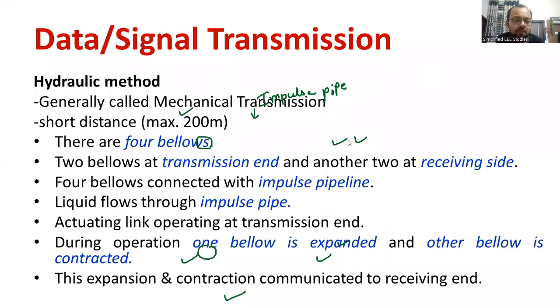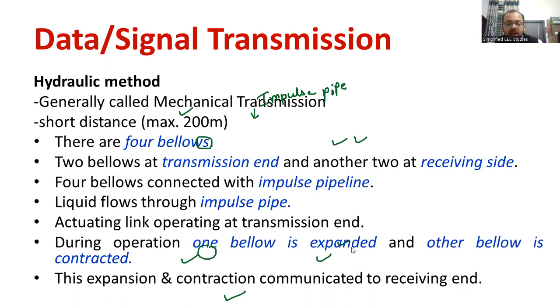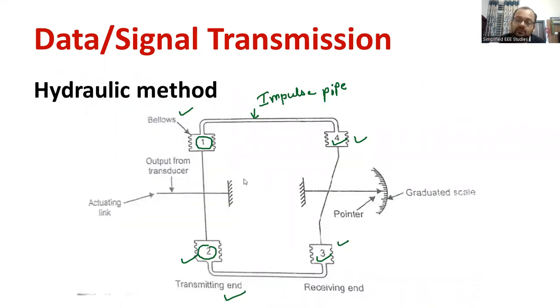It is also known as one of the mechanical method. And each bellows have been connected through the impulse pipe, where the liquid will be passing through the impulse pipe. The information will be transmitted through the liquid. That is the specialty of hydraulic method. Moreover, one bellow is expanded, other bellow is contracted by transmitting the data. How the data will be transmitted? The expansion and contraction of this bellow, where the liquid will be flowing through the bellows. Suppose a force or a pressure, that information needs to be transmitted to another side. It will be directly transmitting through the liquid which is flowing through the impulse pipe.